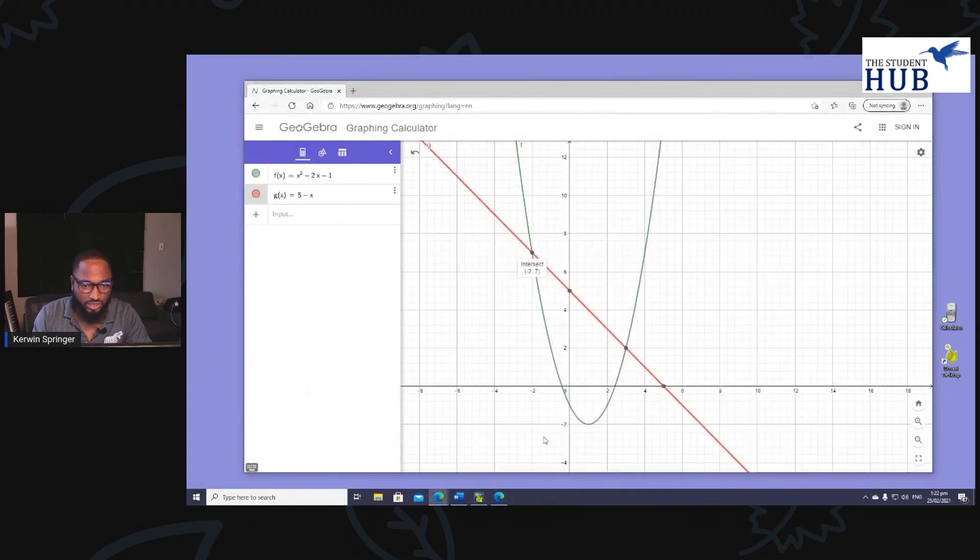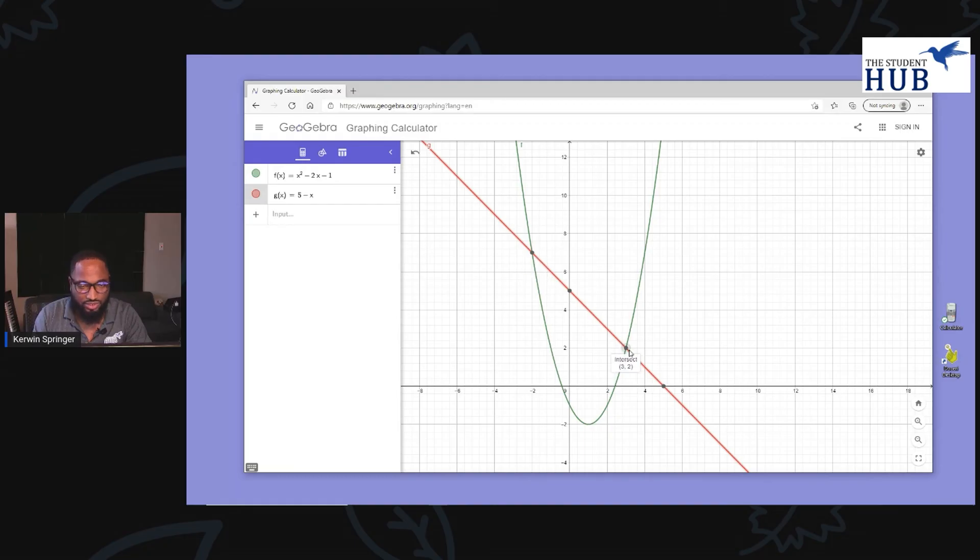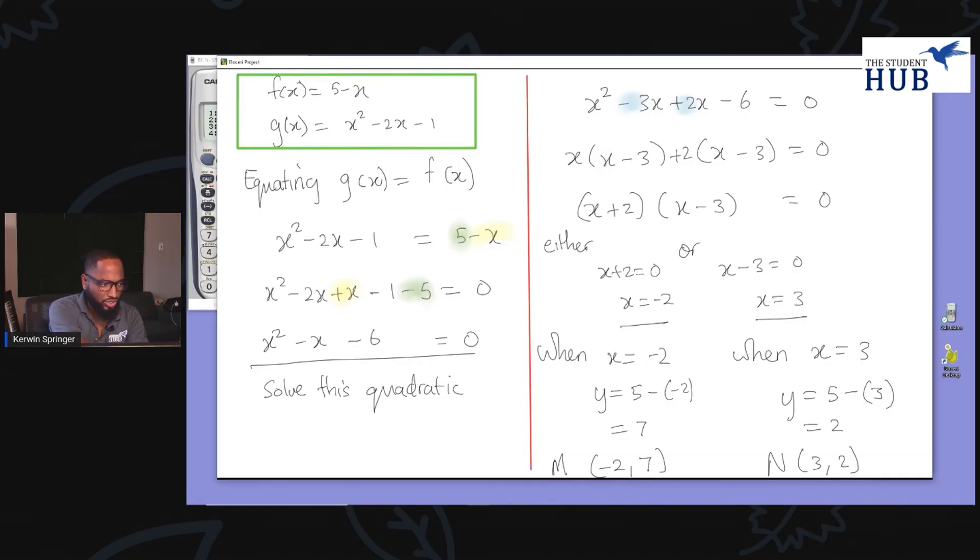So let's see if we got those answers with the graph. Yes, we did. Negative 2, 7. And 3, 2.